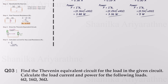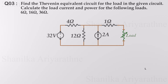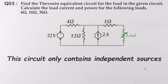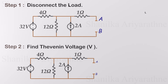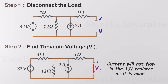Let's try another example. Find the Thevenin equivalent circuit for the load in the given circuit. Calculate the load current and power for the following loads. This circuit only contains independent sources — a voltage source and a current source — so this should be solved under case 1. The first step is disconnecting the load: remove load resistance and keep nodes A and B disconnected. Now we can calculate the voltage across nodes A and B, which is the Thevenin voltage. Here, no current flows through the 1 ohm resistor, so the voltage across A and B equals the voltage across the current source and 12 ohm resistor.